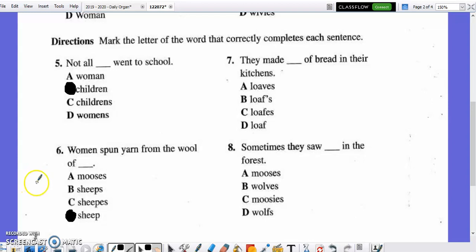Seven. They made blank of bread in their kitchen. A, loaves. B, loafs with an apostrophe S. C, loafus. Or D, loaf. Mark the correct response now. The irregular plural for number seven is A, loaves. L, O, A, V, E, S.